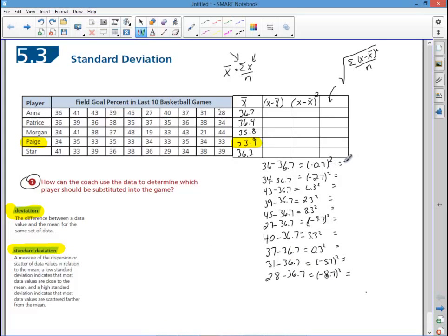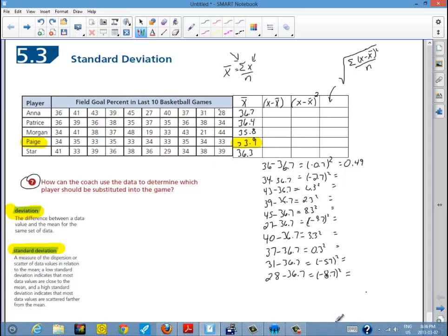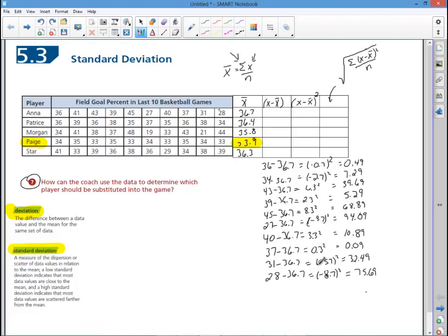I'll complete each of those steps now going down through. Again, take the score, subtract it from the mean. You then take the answer that you obtained and square it. And you do that for each of the numbers in the set listed here. Now that I've done that for each of the scores, this is the deviation. This will be the deviation squared. The last step is to find the total of the deviation squared.